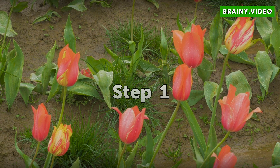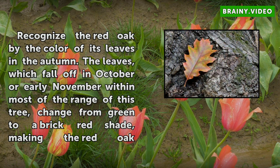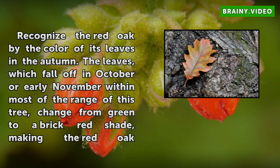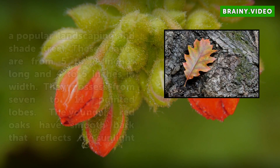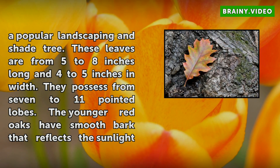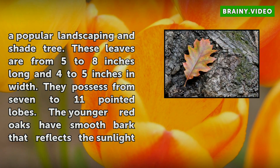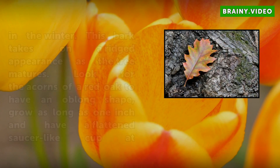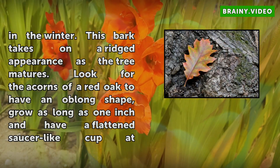Step 1. Recognize the red oak by the color of its leaves in the autumn. The leaves, which fall off in October or early November within most of the range of this tree, change from green to a brick red shade, making the red oak a popular landscaping and shade tree. These leaves are from 5 to 8 inches long and 4 to 5 inches in width, and they possess from 7 to 11 pointed lobes. The younger red oaks have smooth bark that reflects the sunlight in the winter, and this bark takes on a ridged appearance as the tree matures.